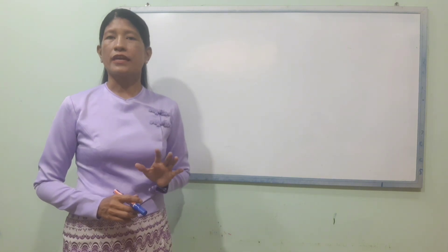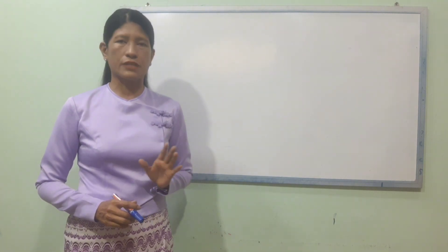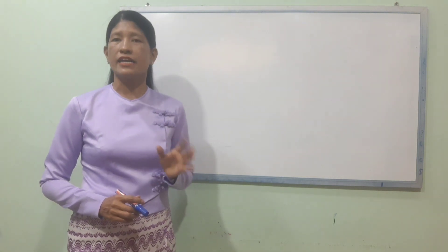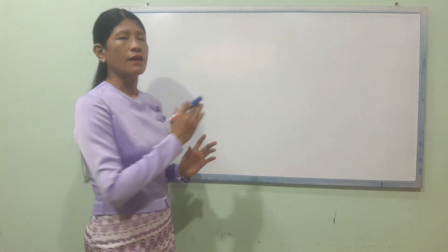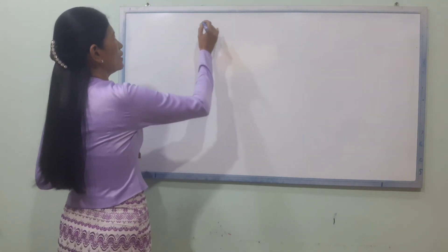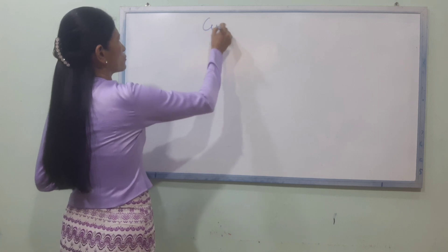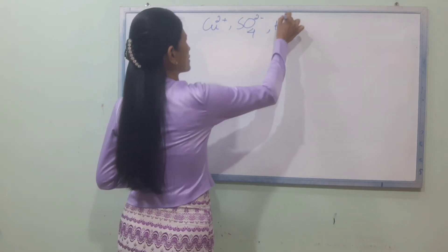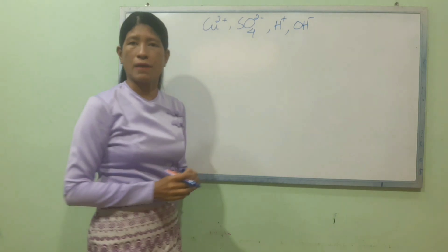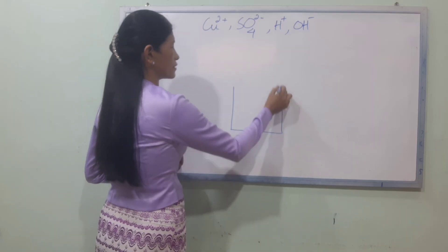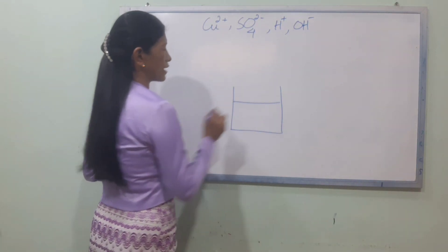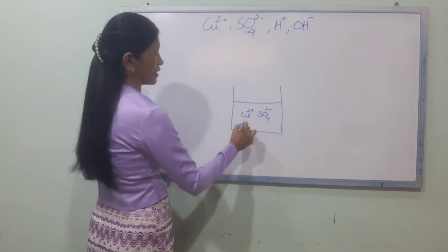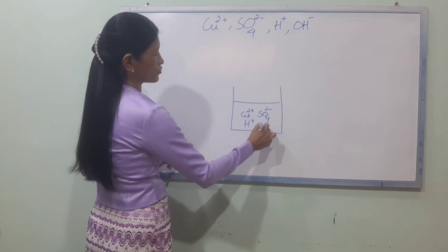Here is a new formula for CuSO4. The solution contains H2O which dissociates into H+ and OH- ions. The solution is made up of Cu2+ ions, SO4(2-) ions, H+ ions, and OH- ions.